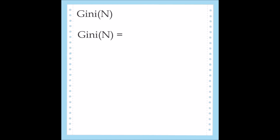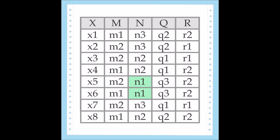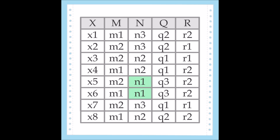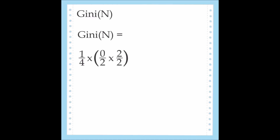After calculating the Gini value of attribute M, we move on to attribute N. As you can see in this system, N1 appears in 2 out of 8, or 1 out of 4 tuples. Multiply that times the probability of N1 being paired with R1 and R2. N1 and R1 never appear in the same tuple. As there are only two values for R, N1 is always paired with R2. Now, repeat these steps with N2 and N3 and add the parts of the equation together.